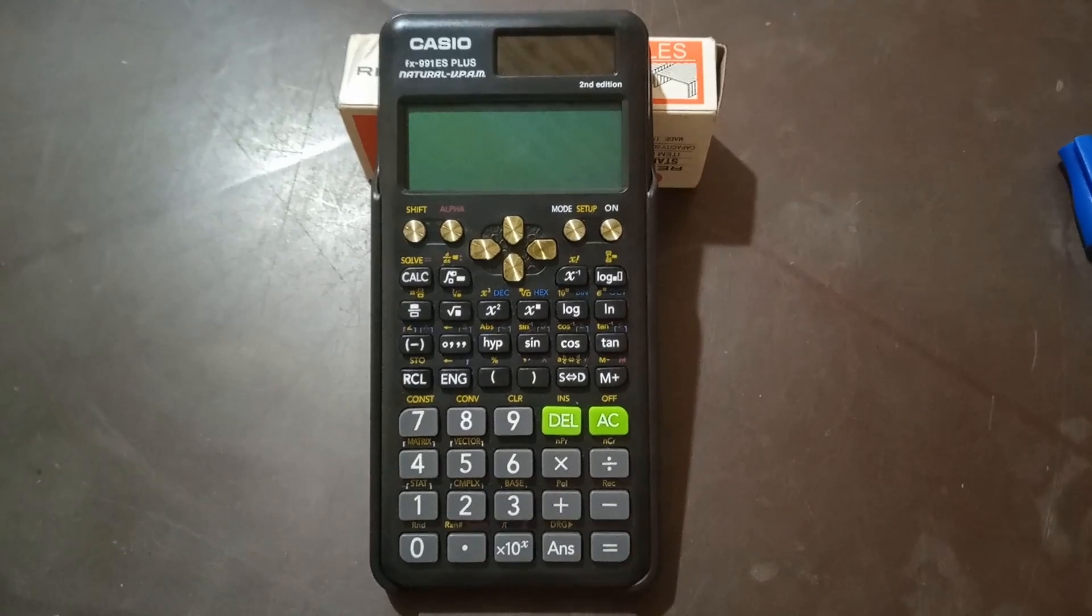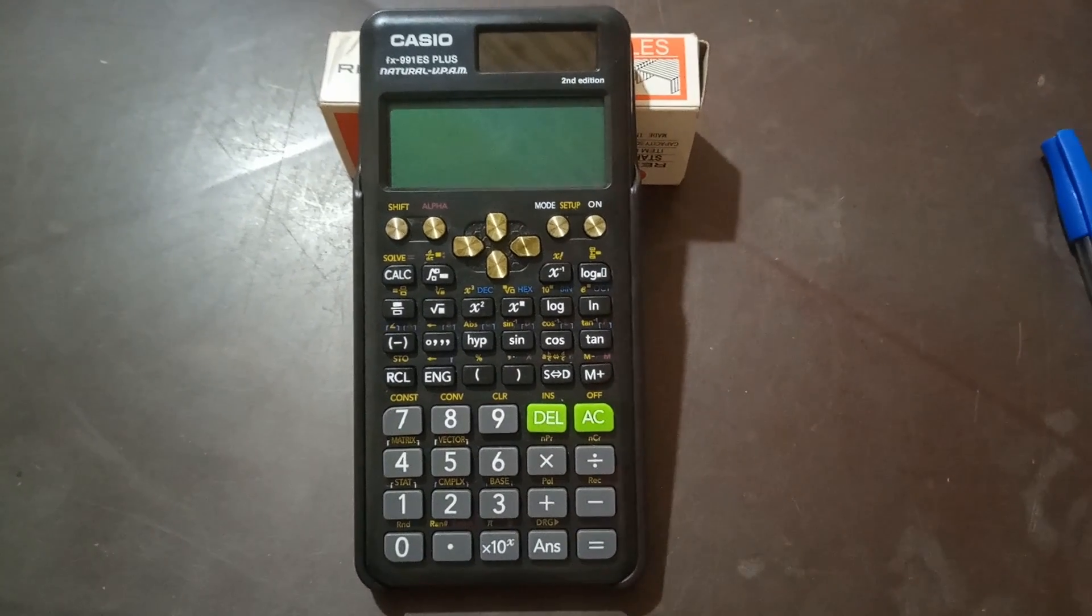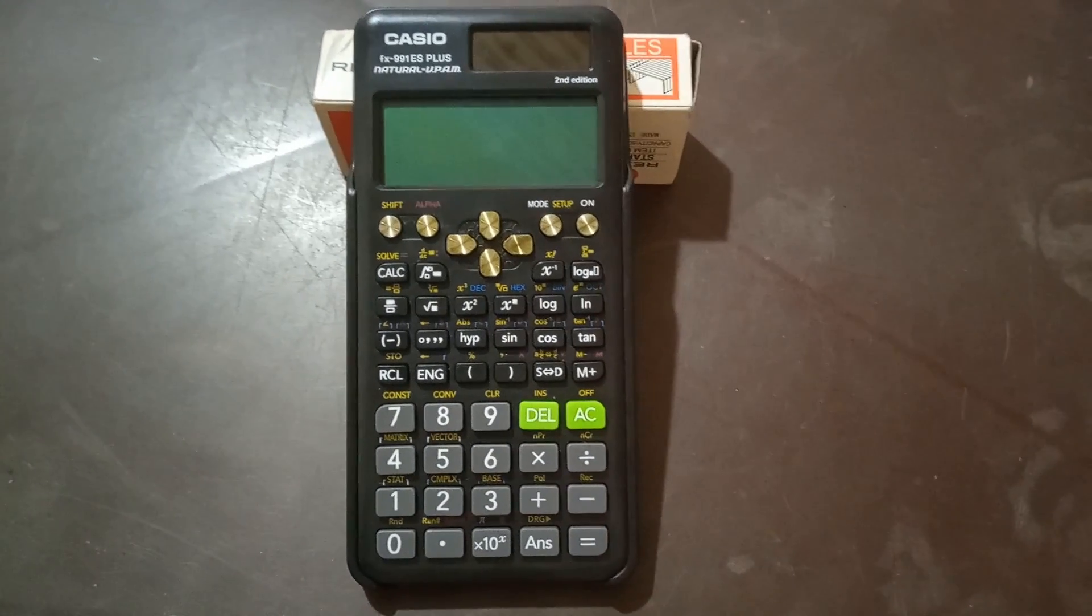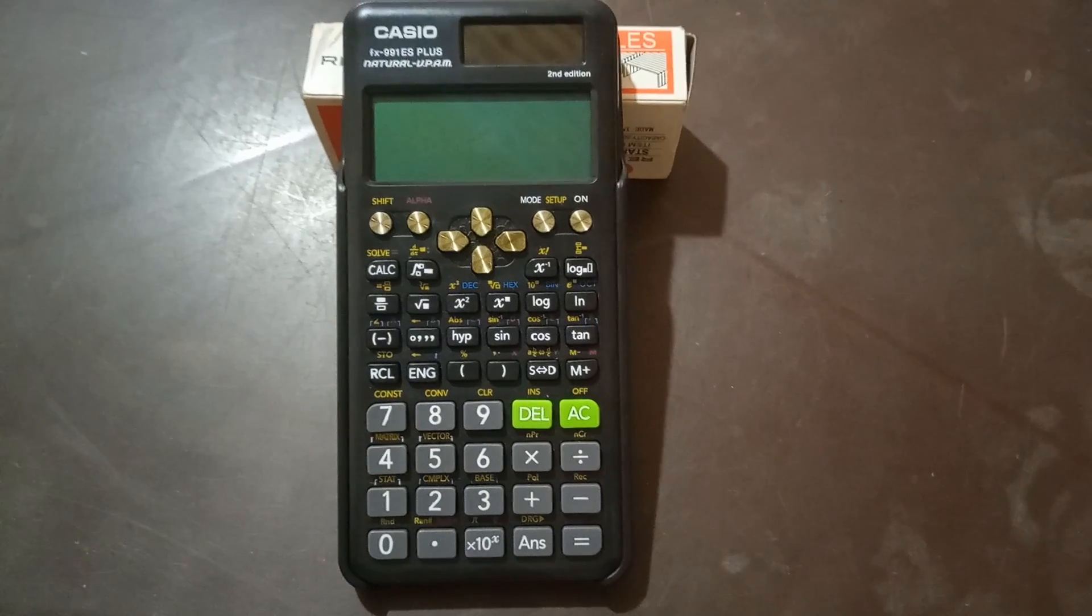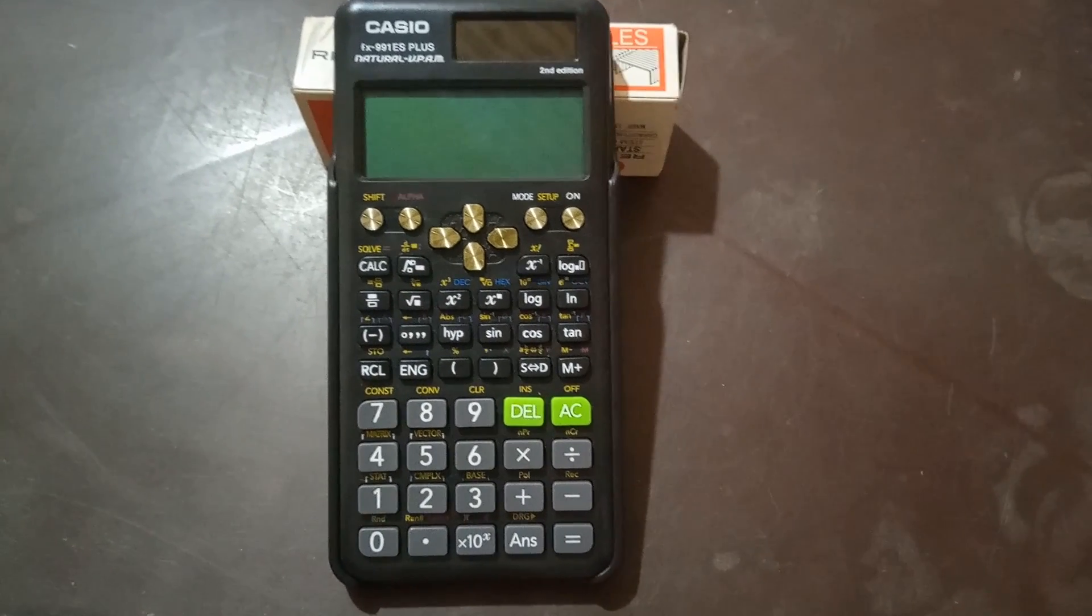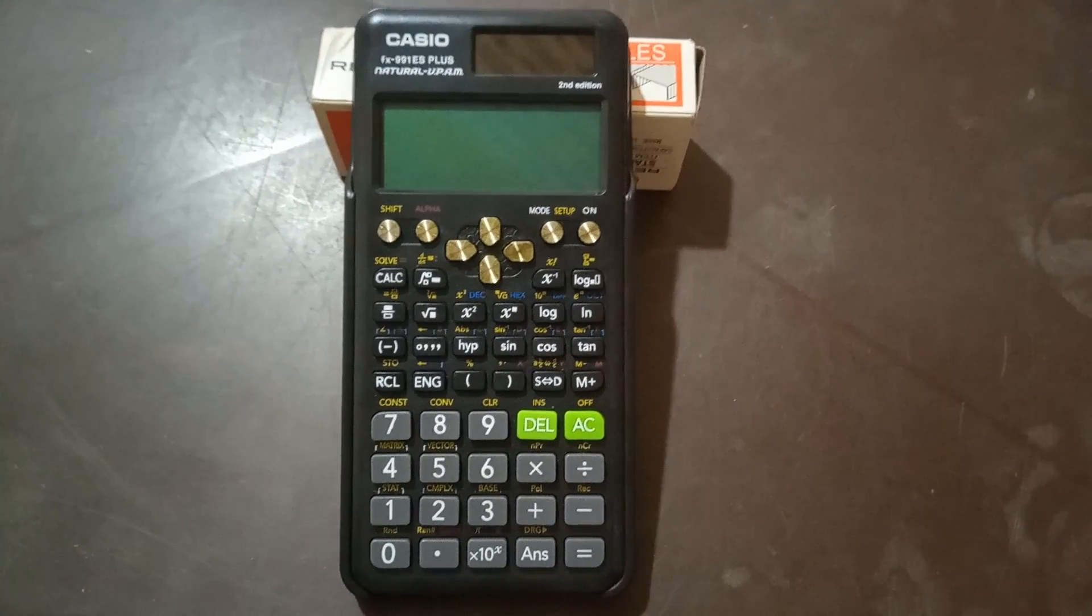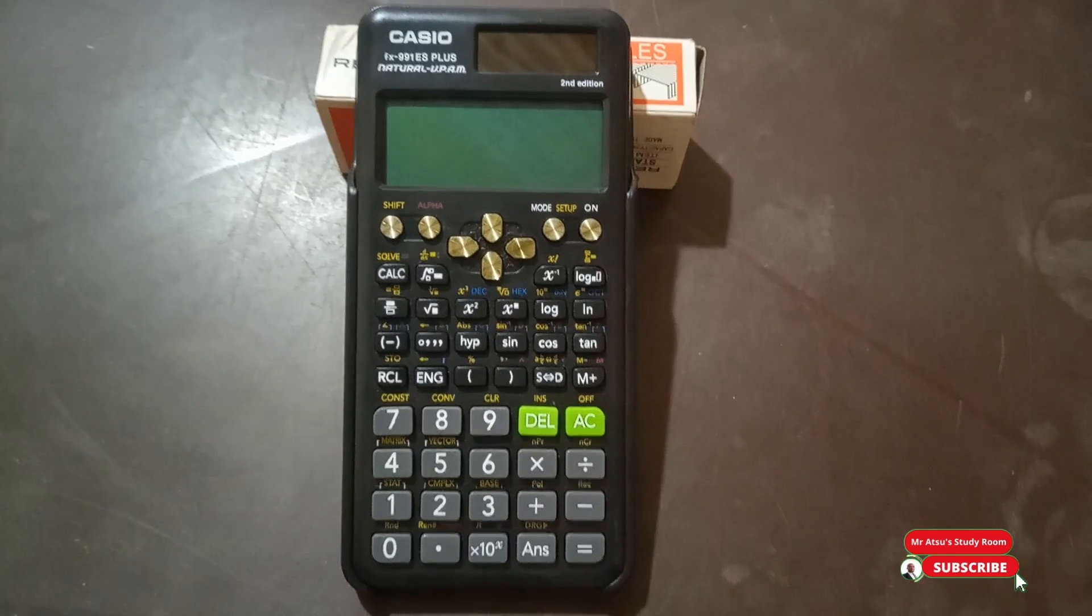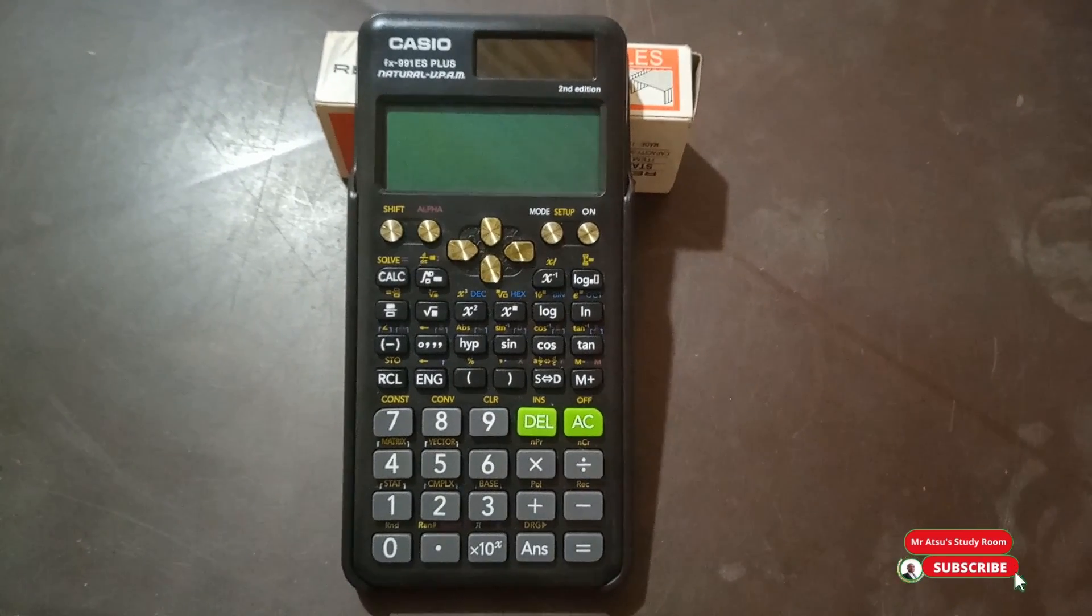Hi, my name is Mr. Chuan. Welcome to my study room. In today's study, we are using Casio FX-991ES Plus second edition to create tables from a quadratic function as well as a trigonometric function.